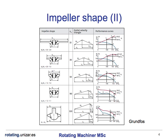In this slide we can see different impeller designs on the left column. We notice each design has a different velocity triangle and thus different performance curves. By just changing one of the geometric values of the impeller, you can alter completely the design of the pump.